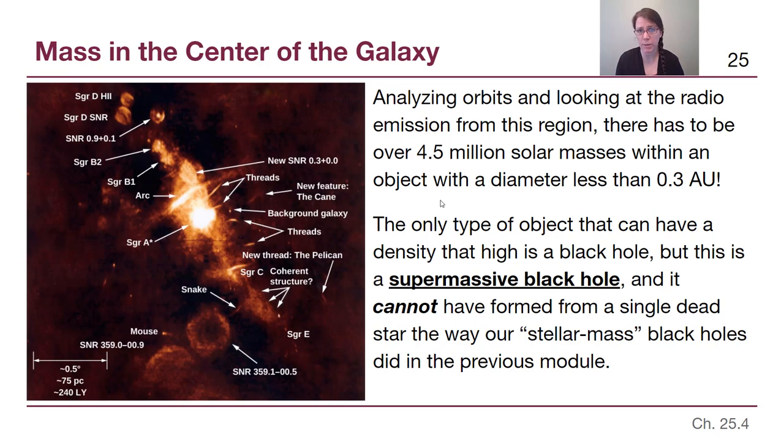But that amount of mass is crammed down into a region that is less than 0.3 astronomical units across. That number might not mean that much to us, but imagine taking four and a half million times the amount of mass the Sun has and squashing it down into a region that is smaller than the orbit of Venus, smaller than our solar system by far.